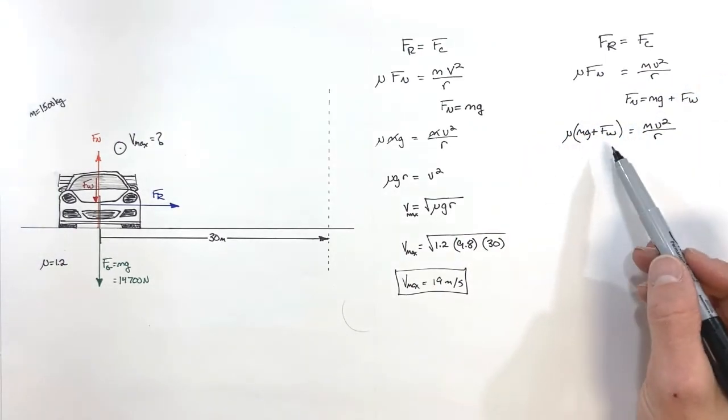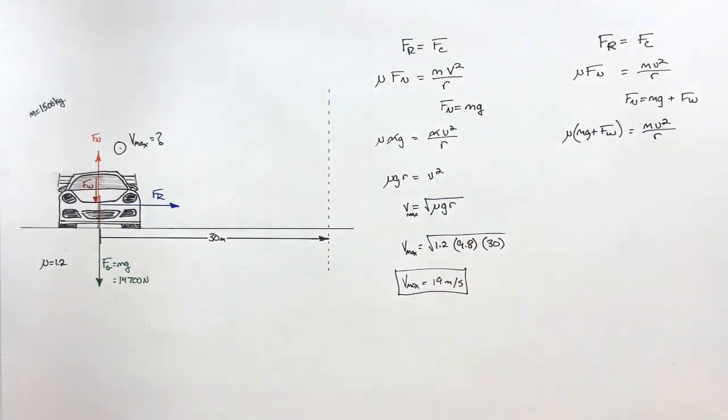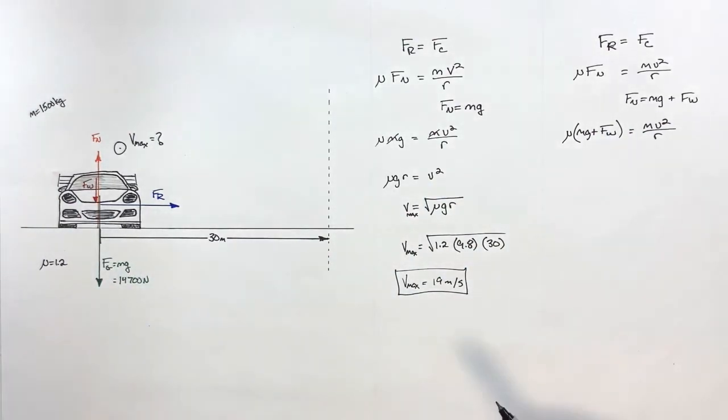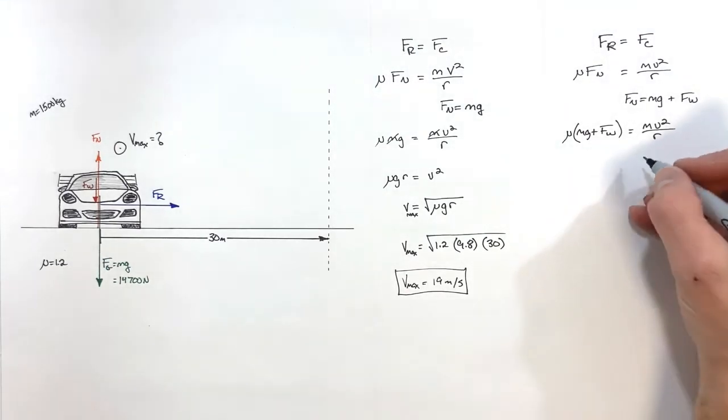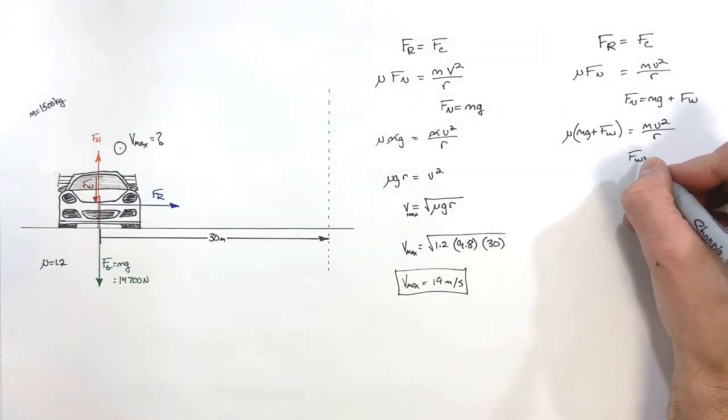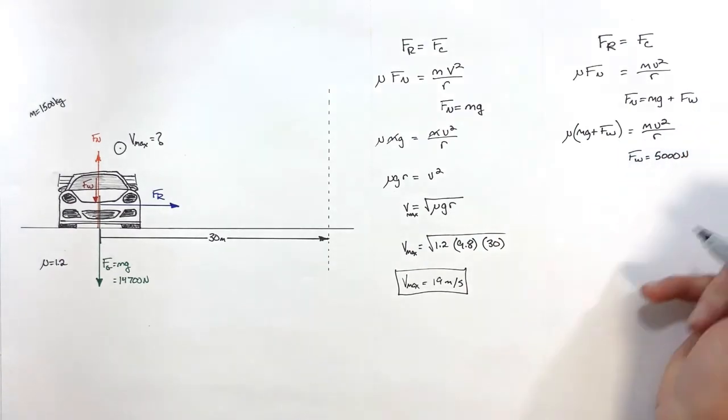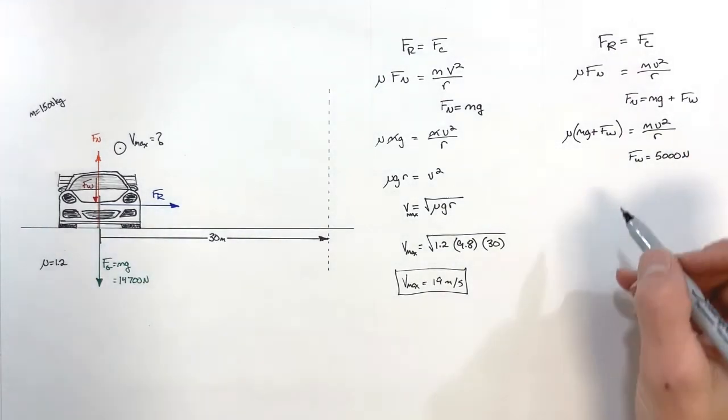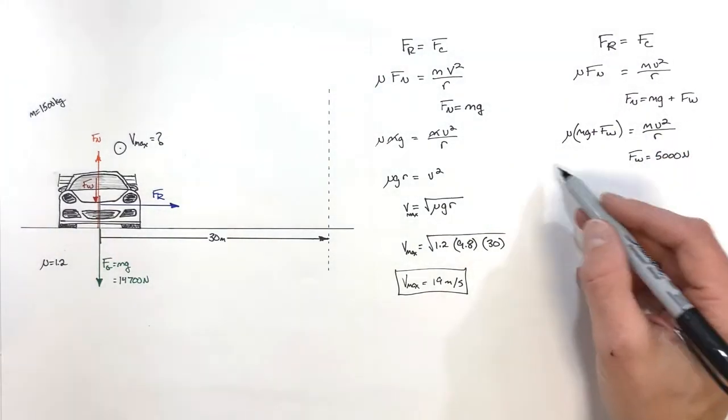You'll notice this time the mass of the car is not going to cancel out, and we actually need to go through and come up with a value for this force by the wing. So let's go ahead and just say the force by the wing is 5,000 newtons. If you put a bigger wing on there, it'd produce more downforce, but this 5,000 newtons—that's not an unreasonable value. And let's plug in our numbers here now.